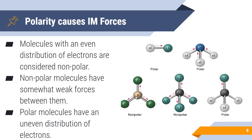Looking at CH3Cl on the far right, the primary direction of electron pull is up, therefore the molecule is polar. The real key thing to keep in mind is that when you draw your Lewis structures, you need to think about the geometry, because the geometry is going to help you determine if things are polar or nonpolar.